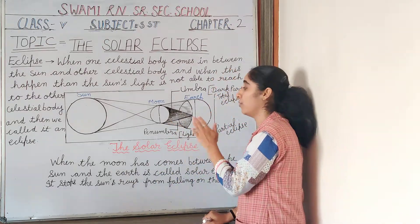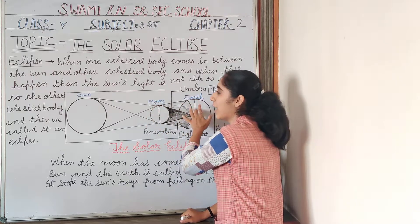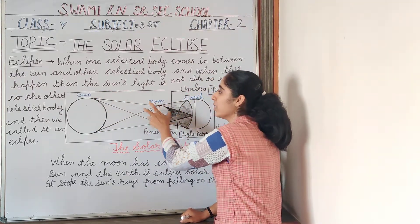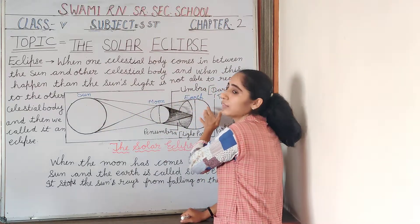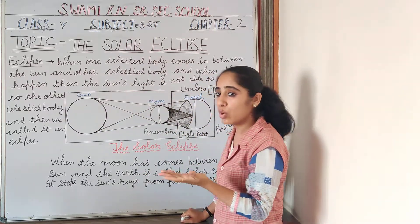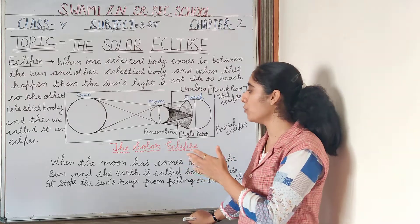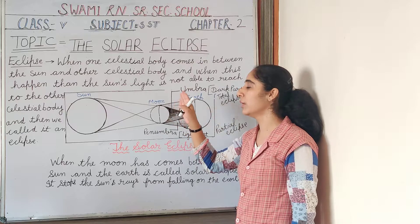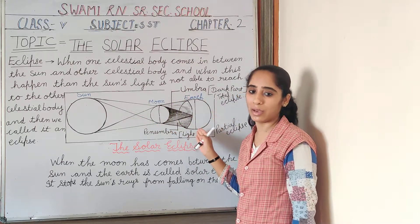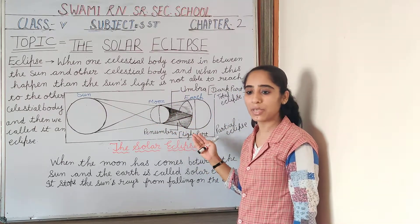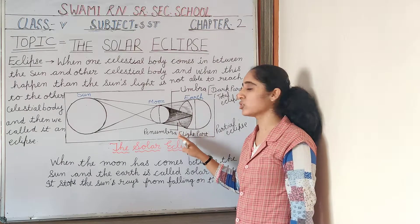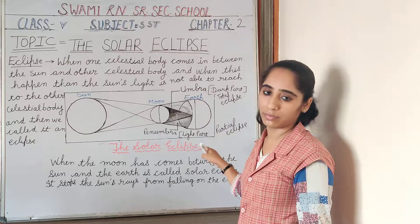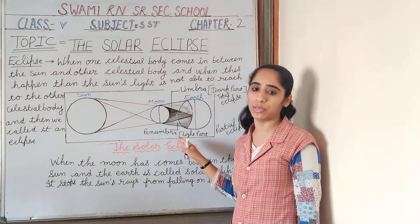When does solar eclipse happen? When the moon, earth, and sun are in the same line, and the moon is between the sun and the earth, then the eclipse happens. I hope all of you understood about the solar eclipse — the moon comes between the sun and the earth, and then the solar eclipse happens. Please go through this video and learn all the things discussed.